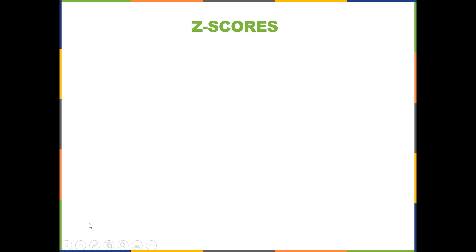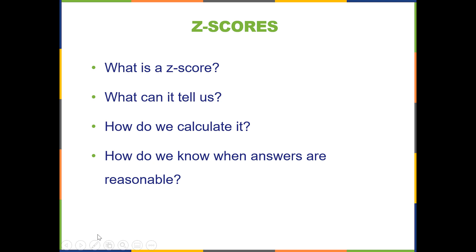In this video we're going to pick up where we left off. So far we've learned what a z-score is, what it can tell us, how to calculate it, how to know when answers are reasonable, and how to make a calculator to do conversions conveniently in Excel just by changing the mean and the standard deviation based on the problem you're working on.